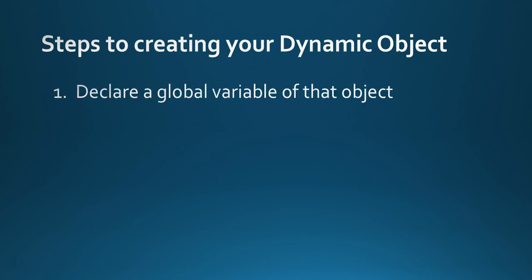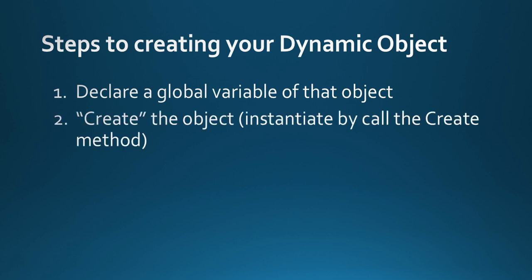The first step is to declare a global variable of that object. So if we're going to make a dynamic button, we need to declare it as a global variable. If you're making a dynamic edit box, you need to declare that as a global variable so that you can use it throughout the program. Then we are going to use the create method — that's instantiating the object by calling this create method. This one we've got to be particularly careful about, as it's very different to how you would normally use other methods.